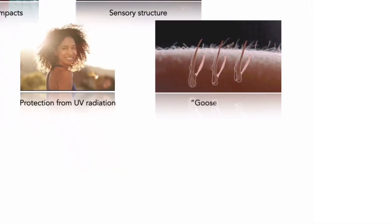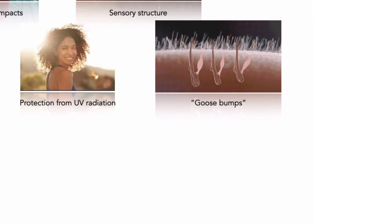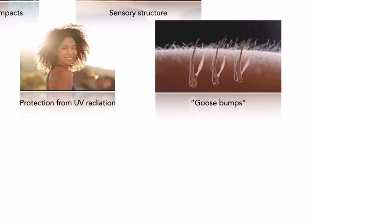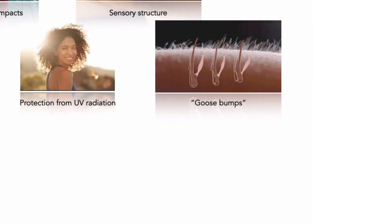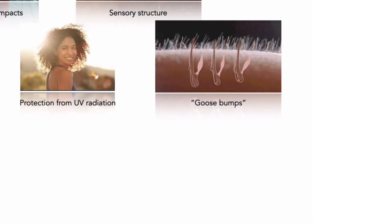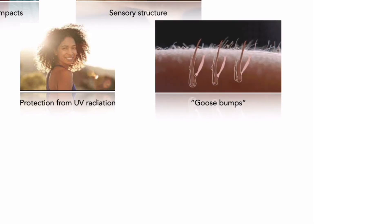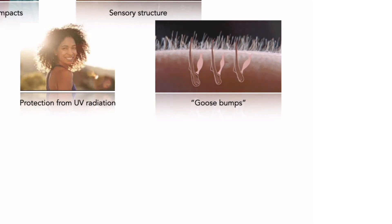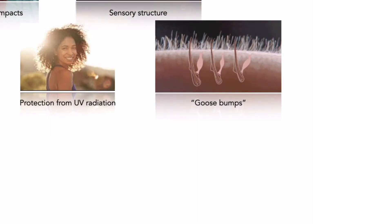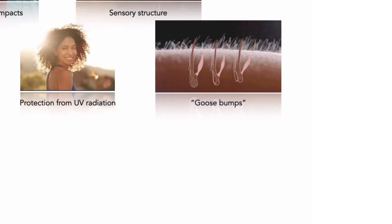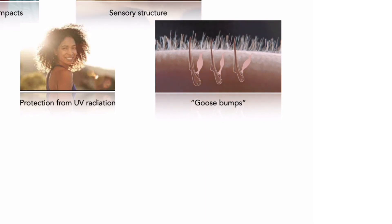A bundle of smooth muscle cells forms the erector pili. It extends from the papillary dermis to the connective tissue sheath around each hair follicle. When stimulated, the erector pili pulls on the follicle, forcing the hair to stand up. Contraction may be caused by emotional states such as fear or rage, or a response to cold, producing goosebumps. In a furry mammal, this action increases the thickness of its insulating coat. Humans do not receive any comparable insulating benefits, but the response persists.